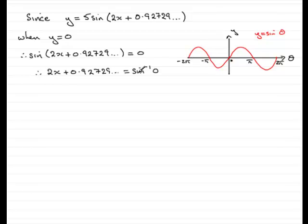So where will this have a value of the inverse sine of 0? Well, the inverse sine of 0 then is going to be 0, pi, 2 pi and minus pi and minus 2 pi.